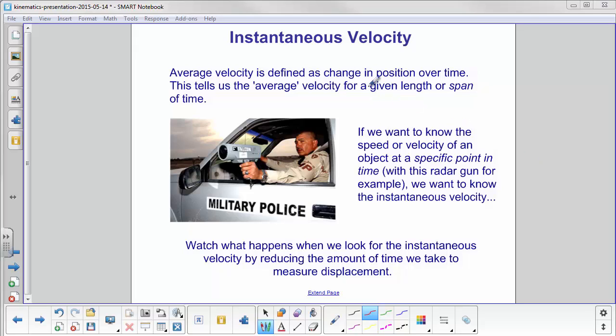Average velocity is the change in position over time. This gives us the average velocity for a given length or span of time. If we want to know the speed or velocity at a specific point in time, what they're doing right now, not what they were doing two seconds ago or two seconds in the future,